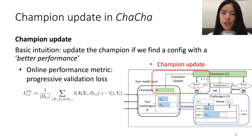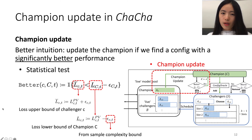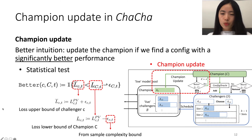So in order to ensure the comparison result is significant, we compare the Challenger's loss upper bound with the Champion's loss lower bound minus a term. The upper and lower bounds are constructed based on the progressive validation loss and the sample complexity bound of the learner. This extra term deducted on the right-hand side ensures that every time we decide to promote a new Champion, we are not only finding a better configuration, but can also guarantee the magnitude of the improvement.